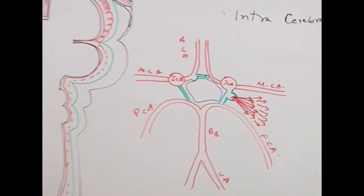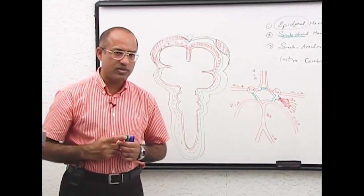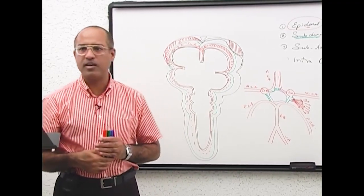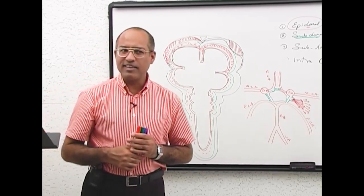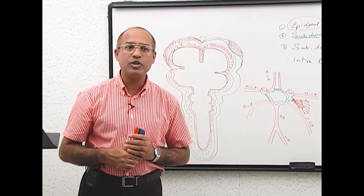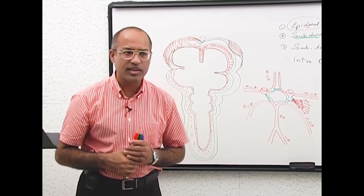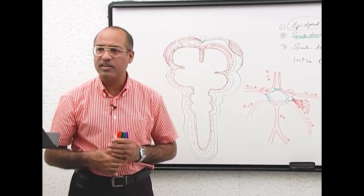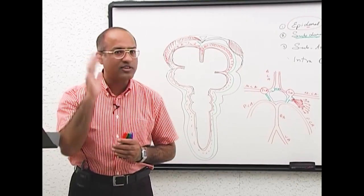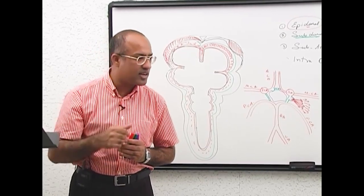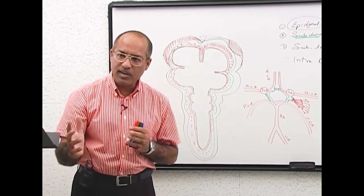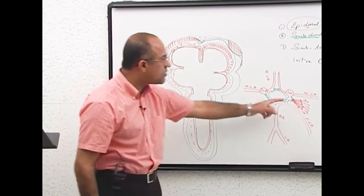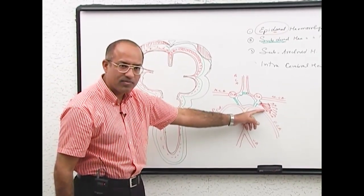So, number one cause of subarachnoid hemorrhage is when there are berry aneurysms within the circle of Willis. About 80% of the cases of subarachnoid hemorrhage. And second cause of subarachnoid hemorrhage is arteriovenous malformations. Second cause is arteriovenous malformations. These are congenital defects. That someone has abnormality in the development of arteries or veins in that area. So either berry aneurysms rupture or arteriovenous malformation ruptures that produces very severe subarachnoid hemorrhage.